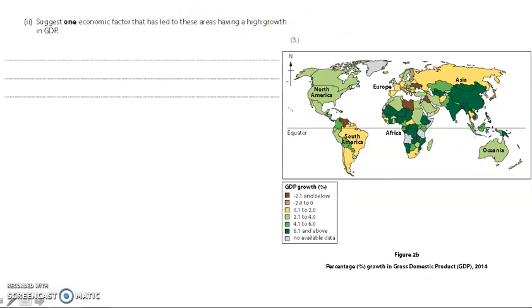Looking at a three marker, suggest one economic factor that has led to these areas having high growth. Now we saw this resource in the previous video where we looked to describe the patterns. So sometimes you've got to reuse the resource for one more thing. So suggest one economic factor, one thing to do with jobs, money, something that's going to lead to growth that has led to these areas having a high growth in GDP. So you're looking at places like China, India, we've got some of these coastal African nations. Why do you think they have had high GDP economic factors? Have a go, have a think about it, pause it now, off you go.